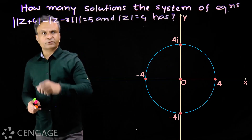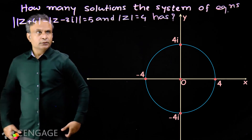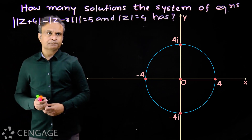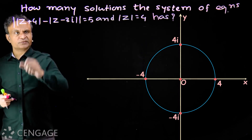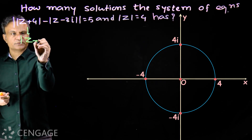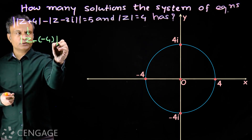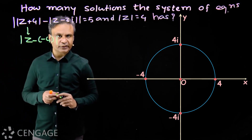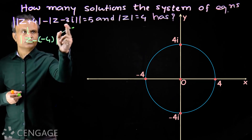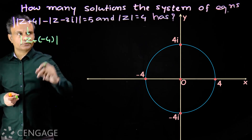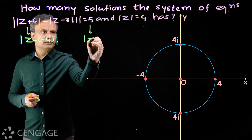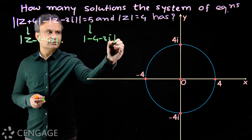Now look at the second equation. What will be the locus? Here three complex numbers are involved. This is the distance between complex numbers z and minus 4, and this is the distance between complex numbers z and 3i. The distance between the complex numbers minus 4 and 3i will be 5.